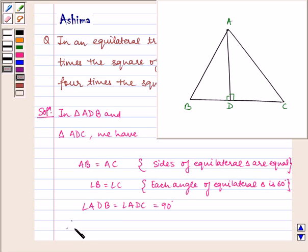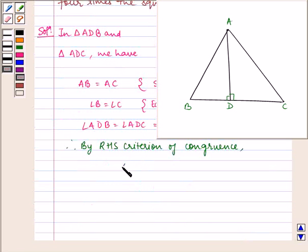Therefore, by RHS criterion of congruence, we have triangle ADB congruent to triangle ADC.